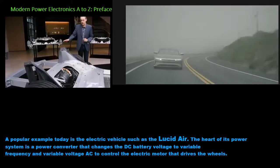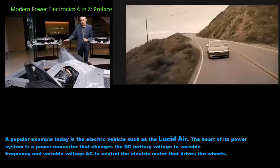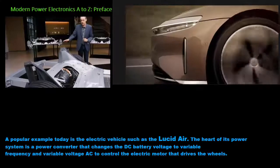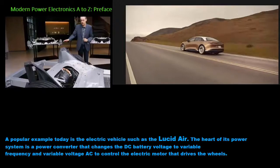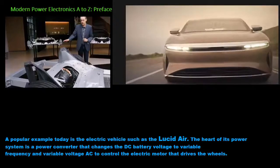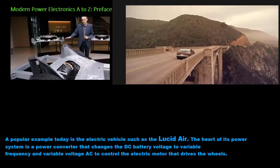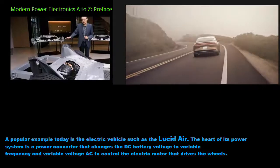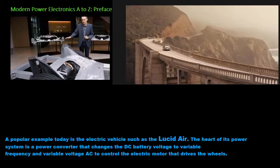A popular example today is the electric vehicle such as the Lucid Air. The heart of its power system is a power converter that changes the DC battery voltage to variable frequency and variable voltage AC to control the electric motor that drives the wheels.